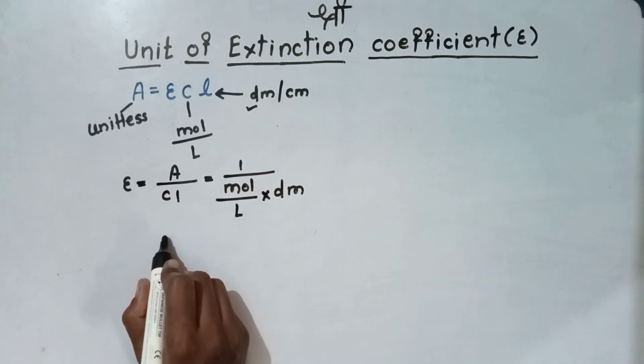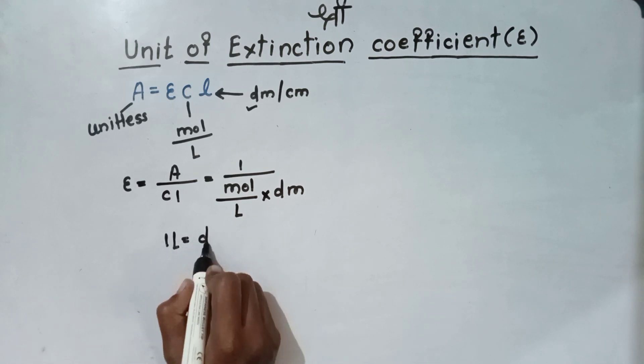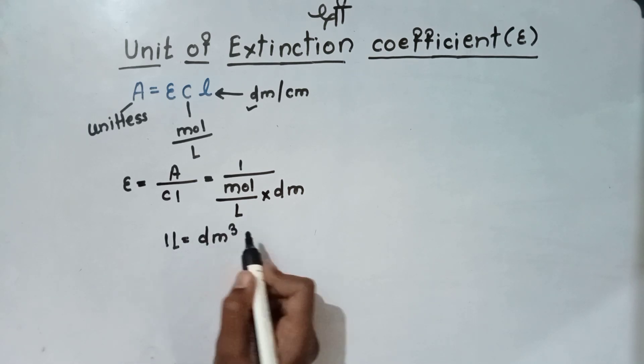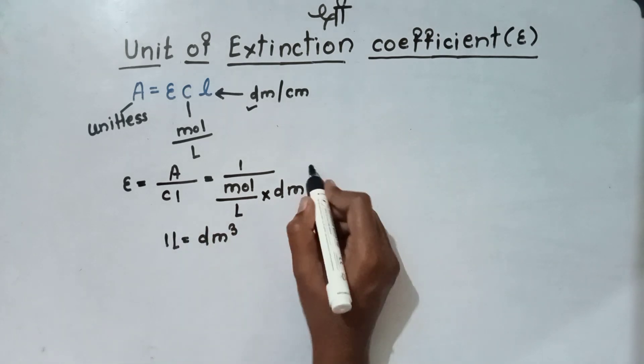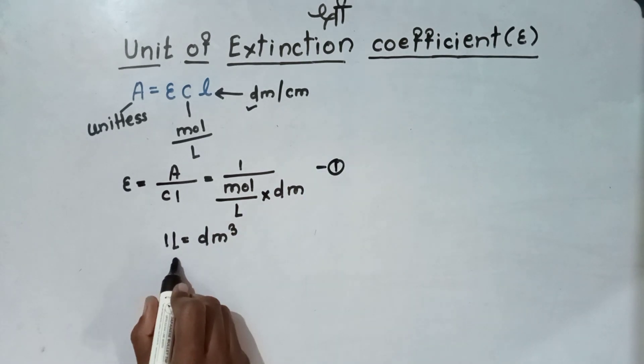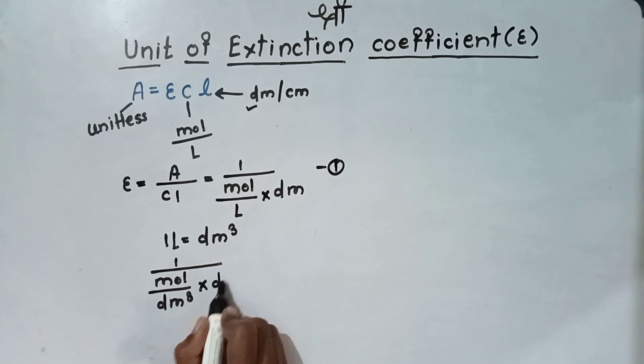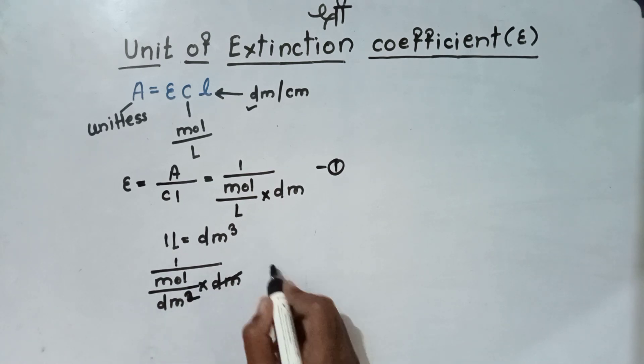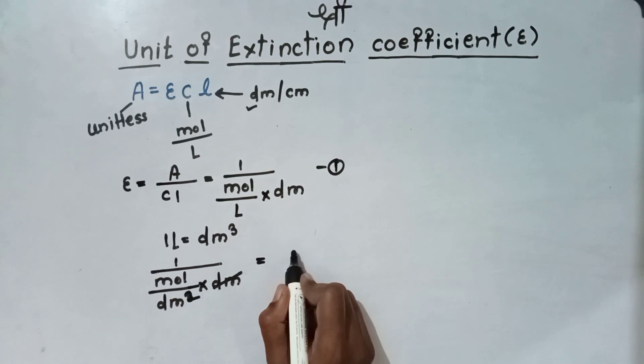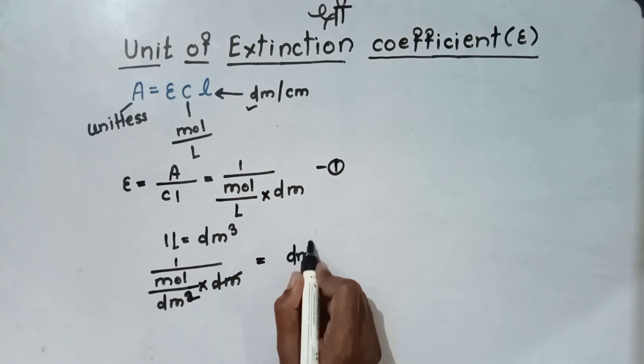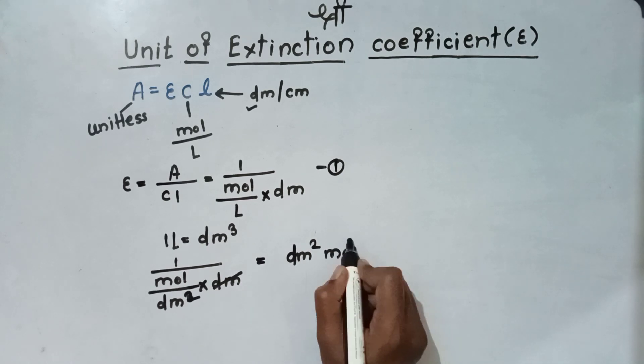We know that 1 liter is equal to decimeter cube. And hence, the formula becomes 1 by mole per dm cube into decimeter. Then, this decimeter cancels out from this decimeter. Then, formula becomes decimeter square into mole raised to minus 1.